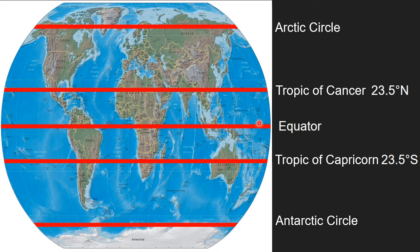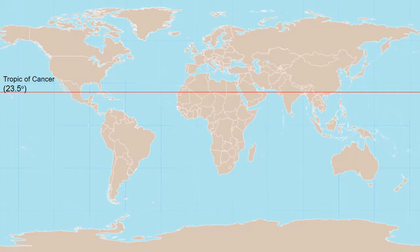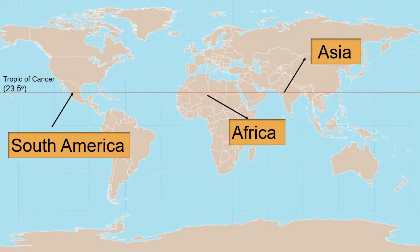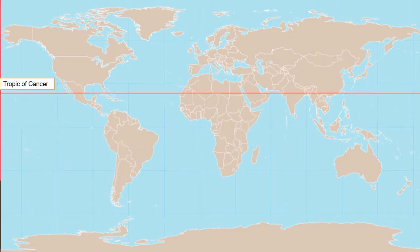As you see in this image, this is the Tropic of Cancer at 23.5 degrees north. Now let's see which countries it passes through. The Tropic of Cancer runs through several countries in three continents including South America, Africa and Asia.